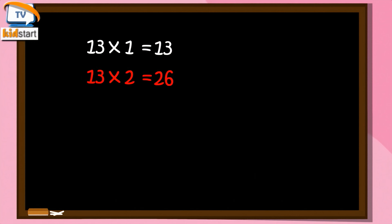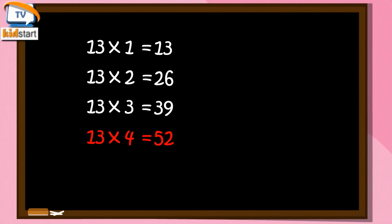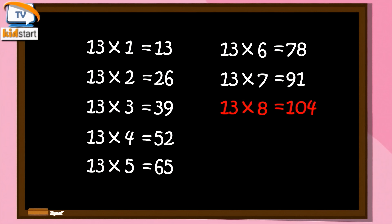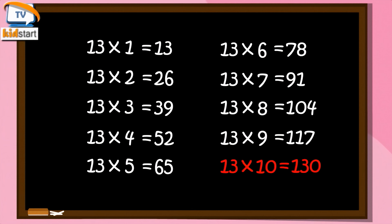Thirteen ones are thirteen. Thirteen twos are twenty-six. Thirteen threes are thirty-nine. Thirteen fours are fifty-two. Thirteen fives are sixty-five. Thirteen sixes are seventy-eight. Thirteen sevens are ninety-one. Thirteen eights are one hundred four. Thirteen nines are one hundred seventeen. Thirteen tens are one hundred thirty.